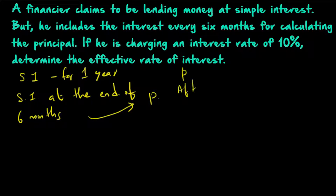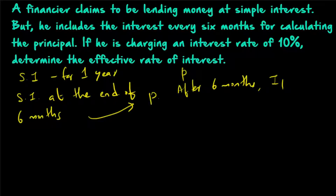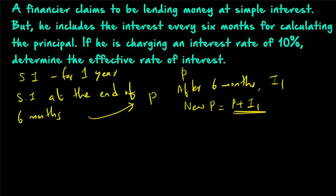After 6 months, let the interest be equal to I1. The new principal at the beginning of the 7th month will be P plus I1. For this P plus I1, he will charge the remaining interest — again charging the interest rate on the new principal P plus I1. So we have to find out the effective rate of interest.